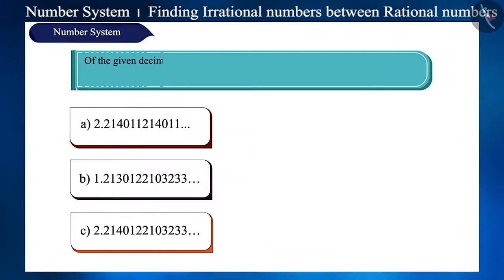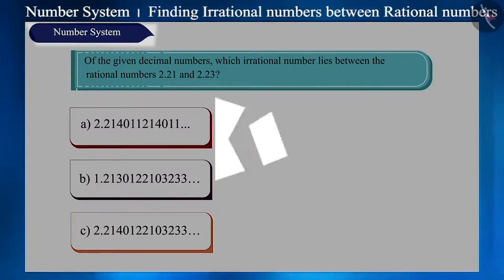From the given decimal numbers, which irrational number lies between the rational numbers 2.21 and 2.23? The answer is very easy. You can think about the answer by pausing the video.